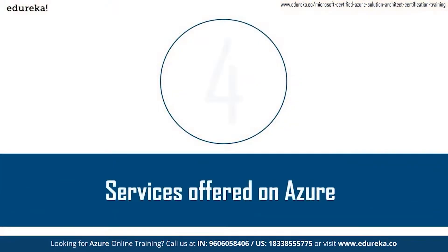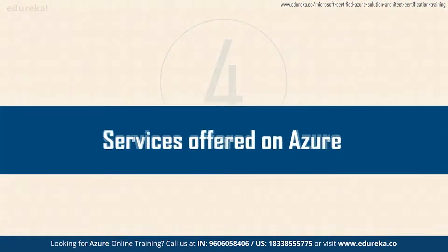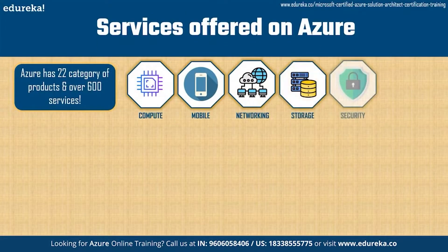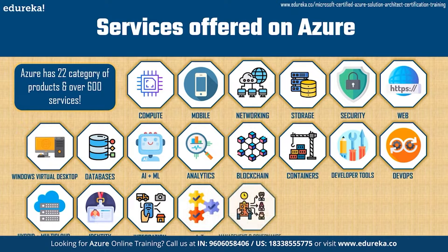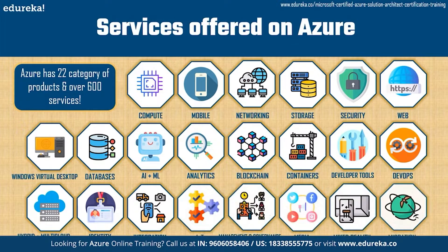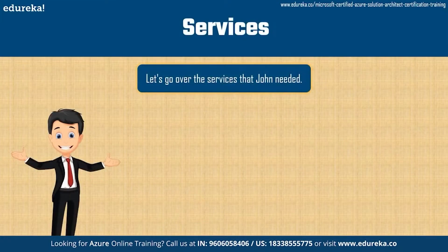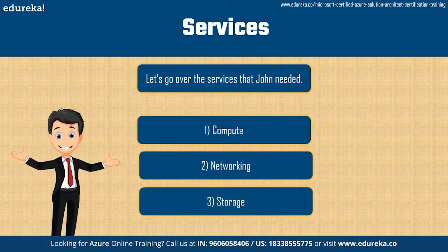Azure has 22 categories of products and over 600 services, so we won't be able to discuss all of them. Your homework is to go to Azure's website and check out each of these categories. John needed three services: compute, networking, and storage. Let's take a look at each one in a little detail.